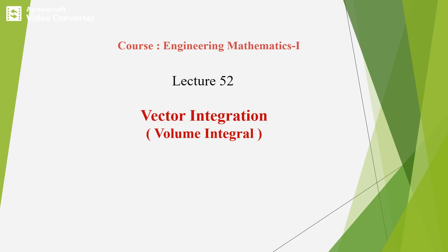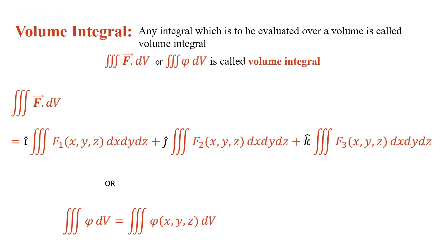Lecture 52: Vector Integration. In this lecture we discuss the volume integral. Any integral which is evaluated over a volume is called volume integration. There are two types of representation. If we have a vector function, the triple integration is used for volume integration, and we write the vector F dot dV. If the function is a scalar quantity, we write the triple integration phi dot dV.